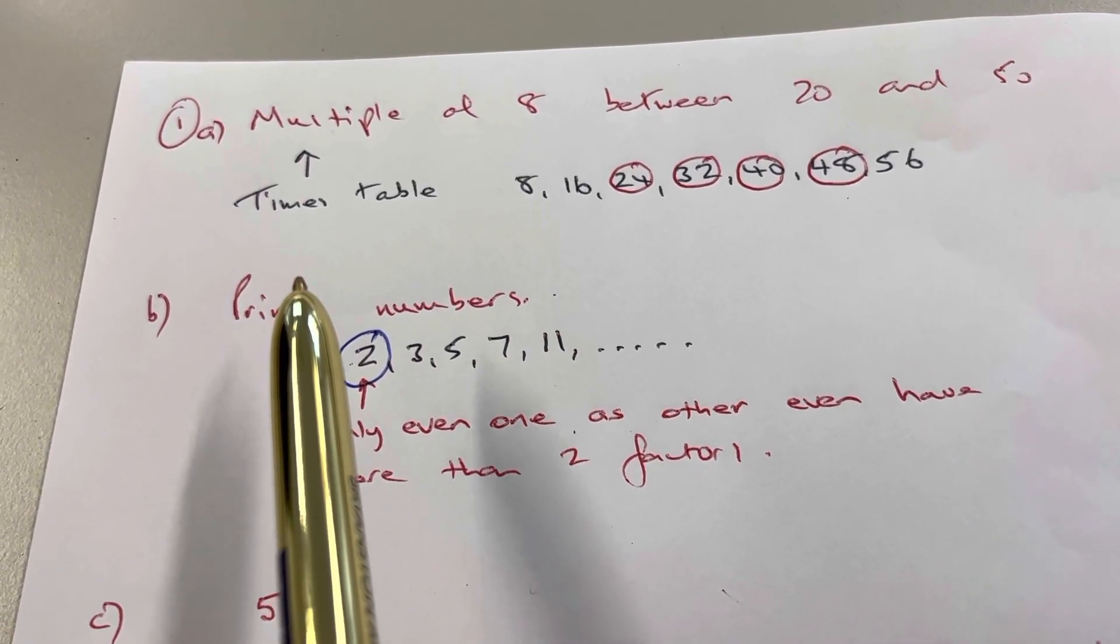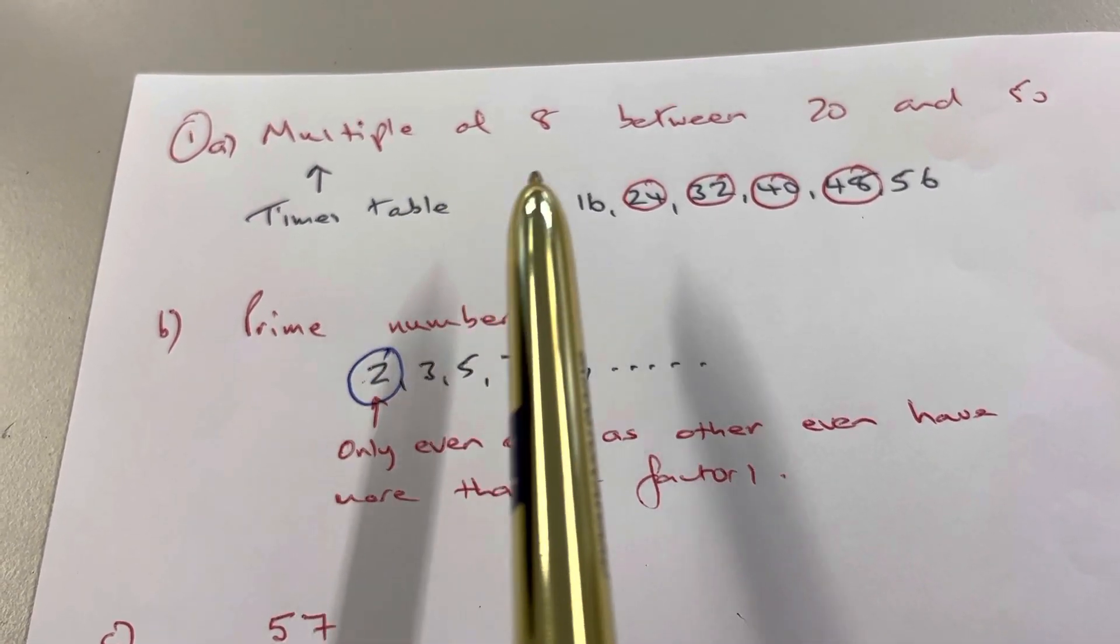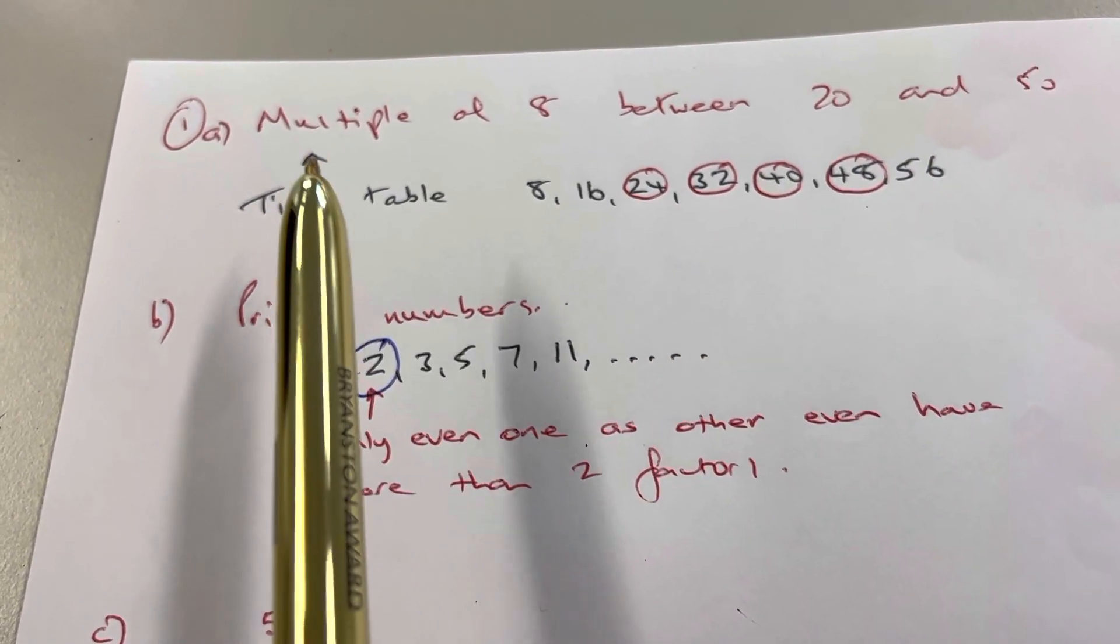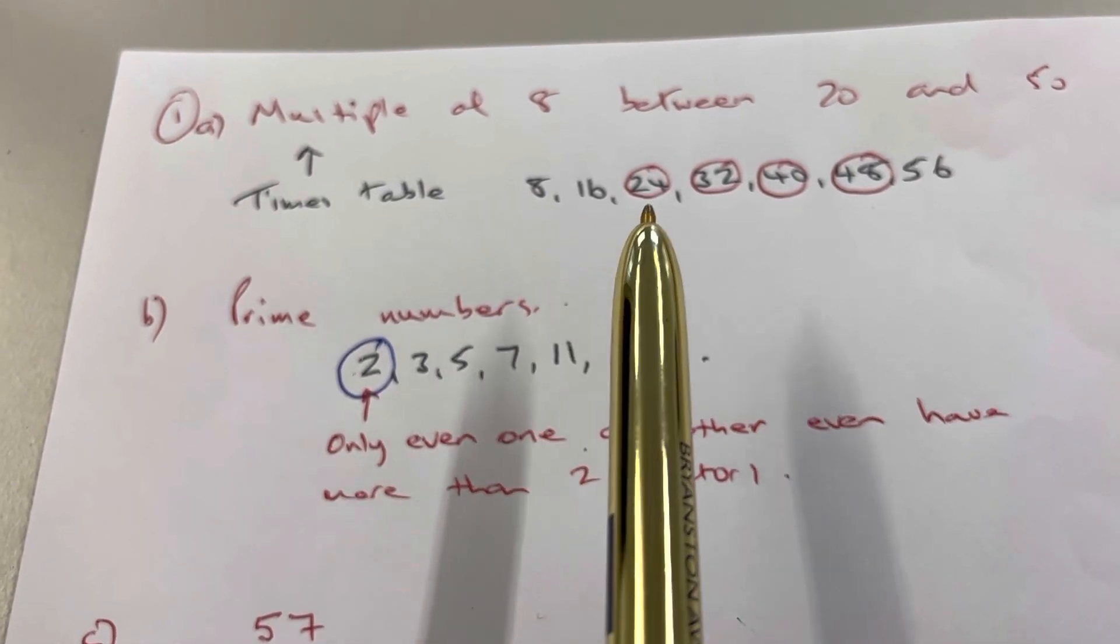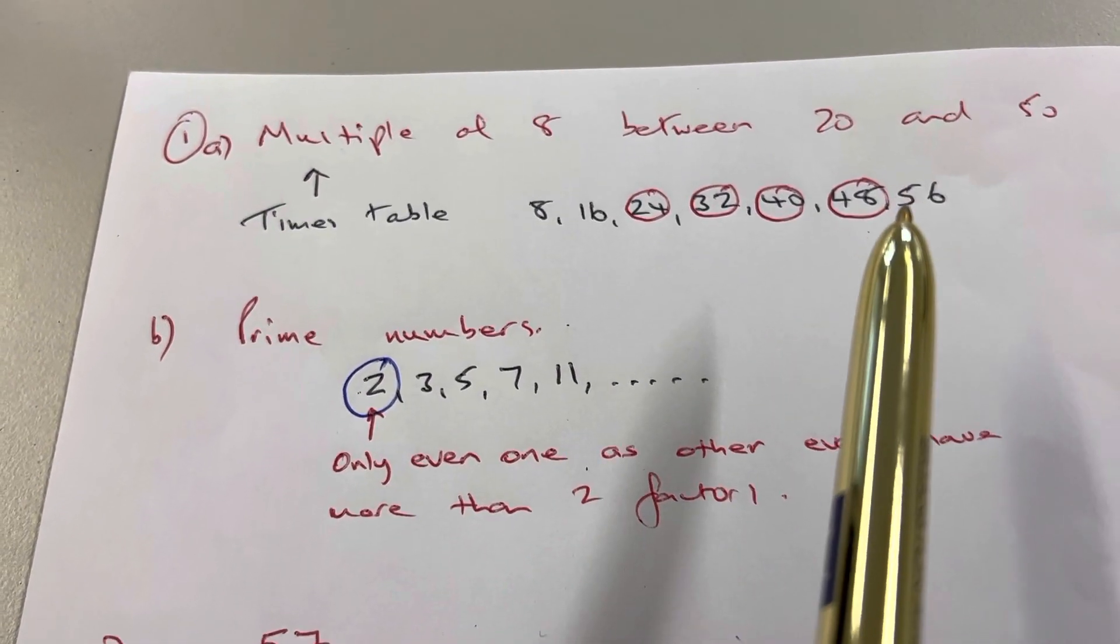Okay, answer to the D test. Question 1A: multiple of 8 between 20 and 50. Multiple means times table, so the times table of 8 goes 8, 16, 24, 32, 40, 48, 56.